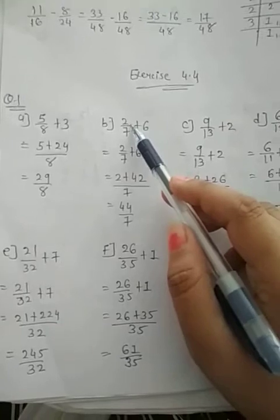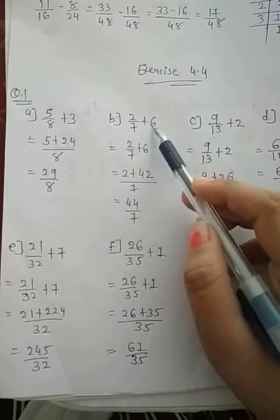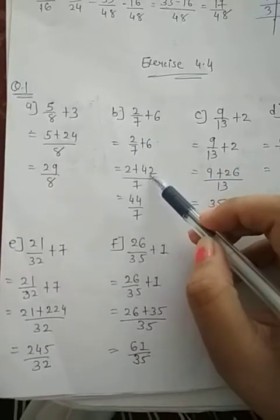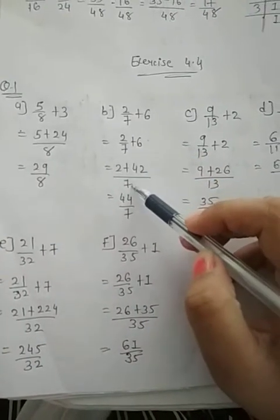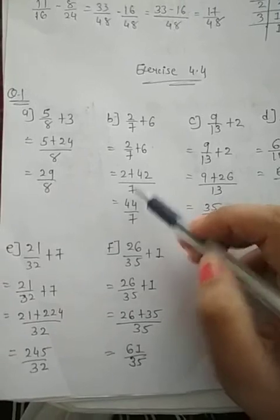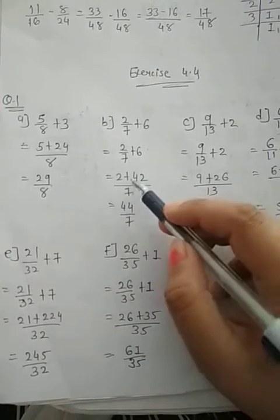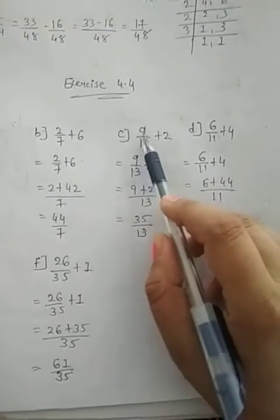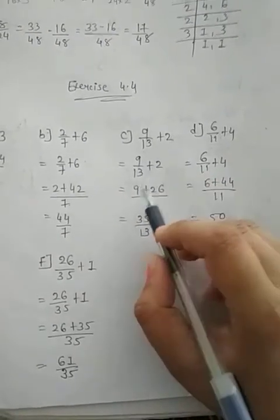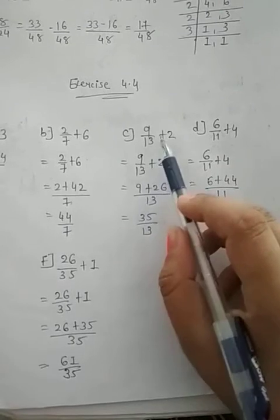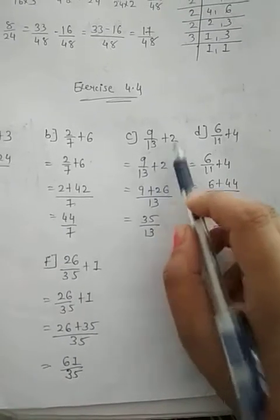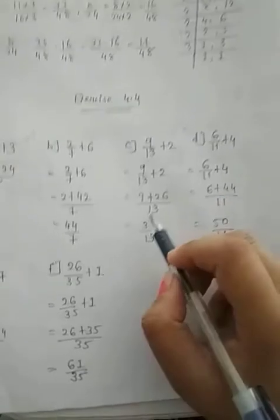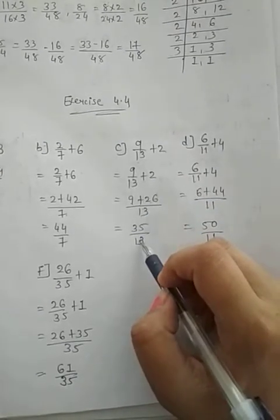Second, B. 2 divided by 7 plus 6. 2 plus 7 times 6 is 42, whole divided by 7. So 42 plus 2, 44 divided by 7. C. 9 divided by 13 plus 2. 9 plus multiplication, 13 times 2 is 26, whole divided by 13. So 26 plus 9, 35 divided by 13.